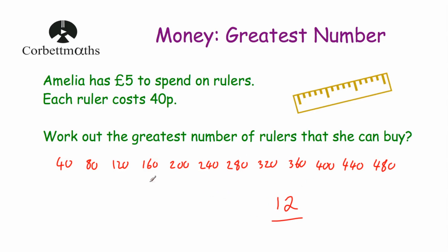The issue with that approach is that if she could buy 700 rulers, writing down and adding 40 each time would take a long time, and we might make a mistake adding 40 seven hundred times. That increases the chances of error and it would just take far too long. So let's look at another approach using division.